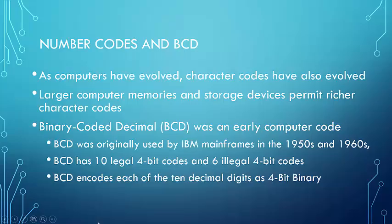BCD stands for binary coded decimal, and has 10 legal 4-bit codes representing 0 by 0000 to 9 by 1001. There are also 6 illegal codes, because with 4 bits we could of course count up to 15. BCD encodes each of the 10 decimal digits as 4-bit binary.